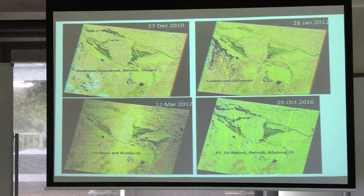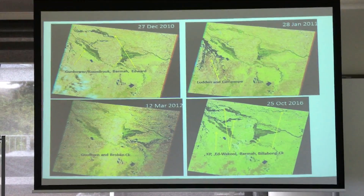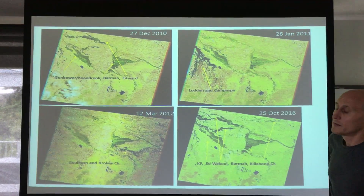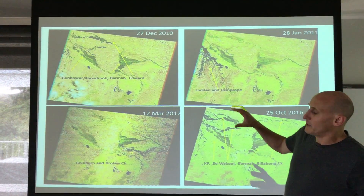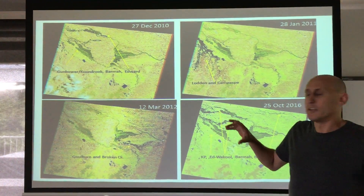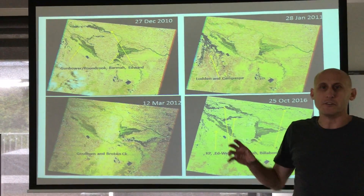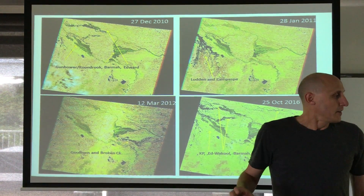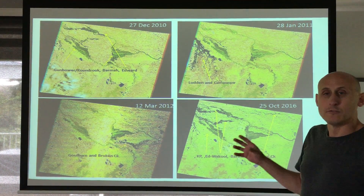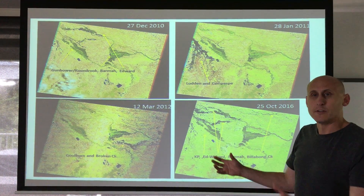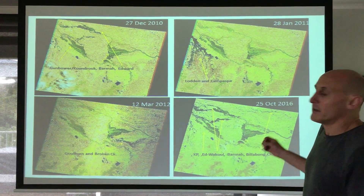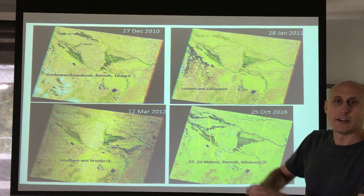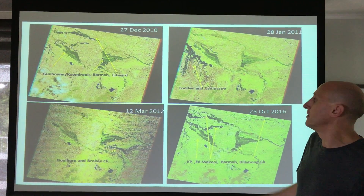Ian Ellis from New South Wales DPI Fisheries gives a rundown of the satellite imagery analysis looking at where the black water in the 2016 flood is originating from. There have been concerns that environmental water is causing this, but that's not the case. The main problem is that this flood inundated areas that haven't had water in a long, long time.